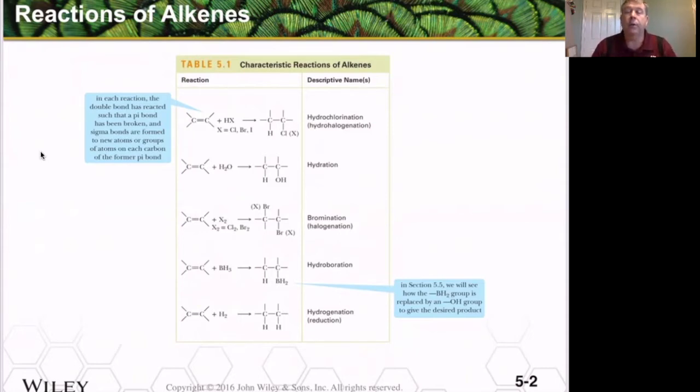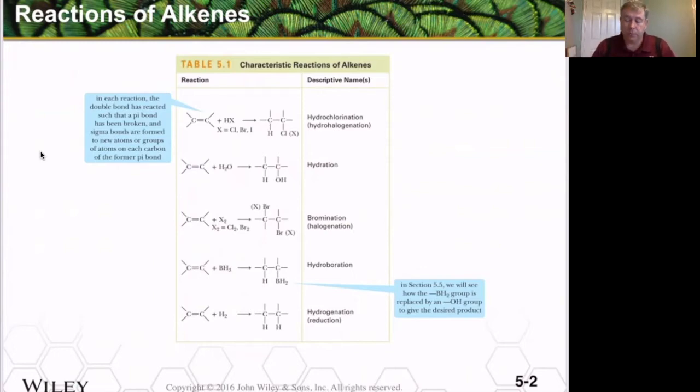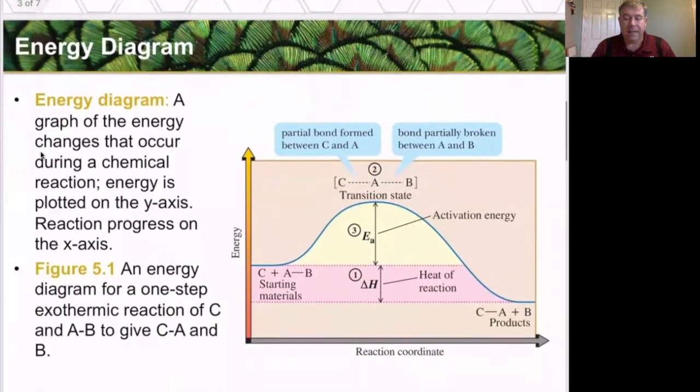We're also going to do an addition reaction called a hydroboration, and typically when you do hydroboration we actually do an additional reaction on it to turn it into an alcohol. And then the last thing we're going to do is add just hydrogen across that double bond, taking it all the way from an alkene down to an alkane. But to do that, before we do that, we need to talk about how reactions work and what we call the energy diagram.